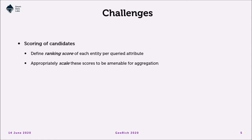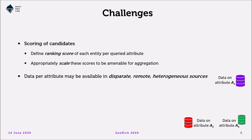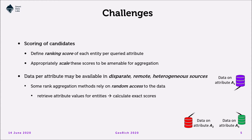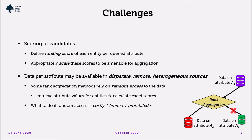We examine two challenging issues. The first concerns overall scoring of candidate entities: since each query attribute specifies its own similarity measure, scores may be expressed in different units, so we need to scale them before aggregation. The second issue is that data may not be available in a single site — data per attribute may be available in disparate, remote, or heterogeneous sources. We have to query each one, fetch results, and then do rank aggregation. Some rank aggregation methods rely on random access to the data to retrieve attribute values on demand and calculate exact scores. But if random access is costly, limited, or not allowed by data sources, we must adapt our methods and perhaps tolerate approximate rankings.